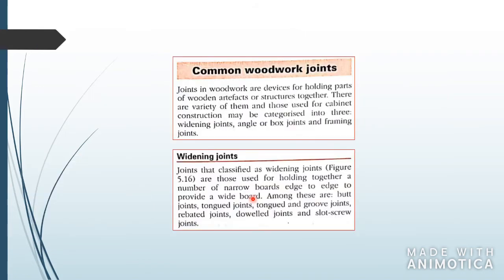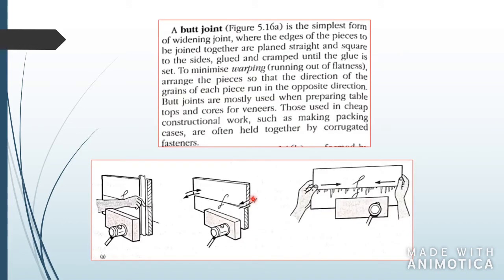Common woodworking joints are devices for holding parts of wood together. The structures of the wood need to be very strong for any kind of cabinet, door, or anything to hold together. The first joint is widening joints, used to widen boards. If you want to make a table and only have narrow boards, you use a widening joint to make your board broader or longer.